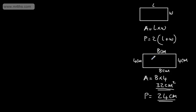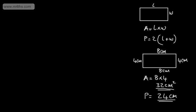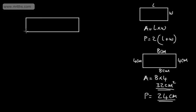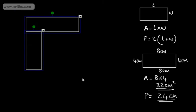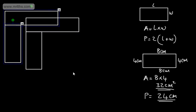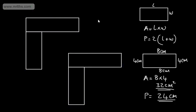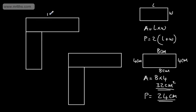Let's now look at a composite shape made of two rectangles joined together. We might be given that this has a length of 10, a width of 7, and another length of 3 centimetres.